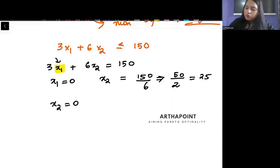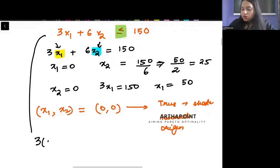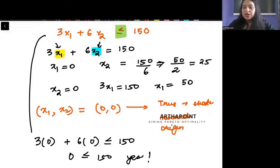Now, you will put x2 as 0. And you will find the value of x1. When you put 0 here, then you will get 3x1 is equal to 150. So x1 will be 50. But this is actually an inequality constraint. Now, what you will do is you will put x1, x2 as 0, 0. If you will get the statement as true, you will shade towards the origin. So I will put 0 here, 0 here, and check if 0 is less than equal to 150. Yes, so it is a true statement, so it will be shaded towards the origin.